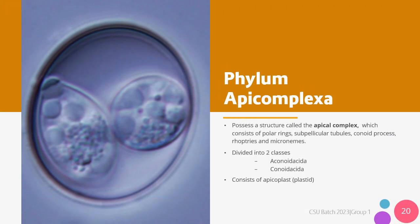Let us start by discussing the phylum Apicomplexa. This group of parasites possess a structure called the apical complex, which is a collection of anterior structures like the polar rings, subpellicular tubules, conoid process, rhoptries, and micronemes, which allow the parasite to invade the host cells. This group of parasites are divided into two classes: first, we have the aconoidasida, and second, the conoidasida. This phylum apicomplexa also consists of a structure called the apicoplast, or what we term the plastid.